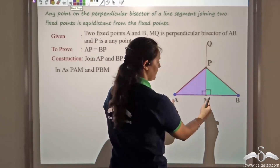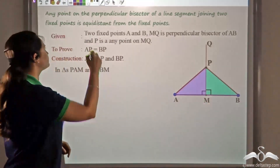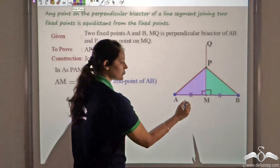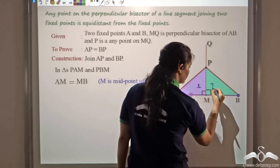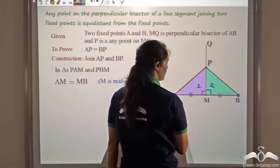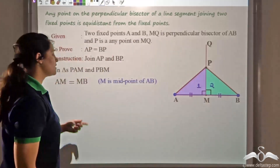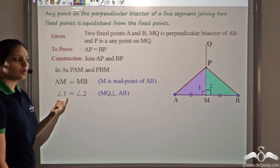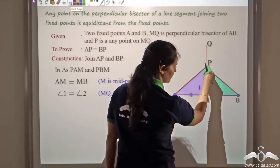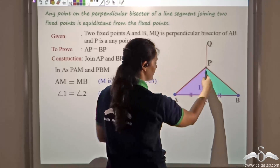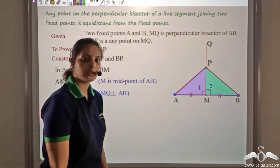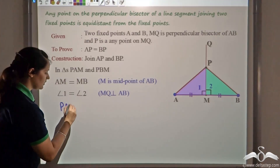In these two triangles, we know that AM is equal to MB because M is the midpoint. The second thing is this angle here — let's call this angle 1 and angle 2. Angle 1 and angle 2 are the same because they are 90 degrees each. Since MQ is perpendicular to AB, angle 1 is equal to angle 2. Now observe line PM. This line is present in triangle PAM and also in triangle PBM, so it is common to both triangles. Therefore PM is equal to PM.